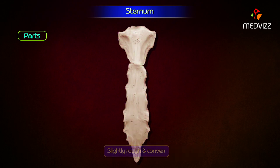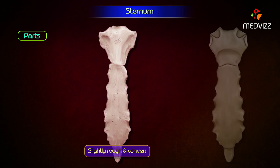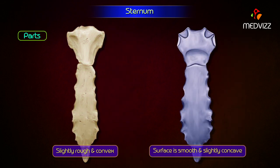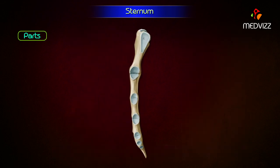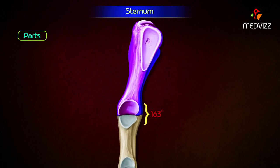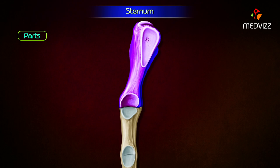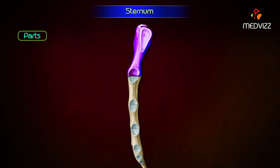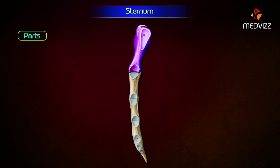Its anterior surface is slightly rough and convex, while its posterior surface is smooth and slightly concave. The manubrium and the body of the sternum lie at an angle of 160 degrees to each other, which increases slightly during inspiration and decreases during expiration.